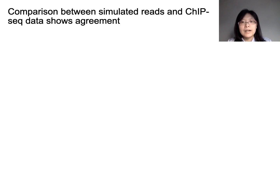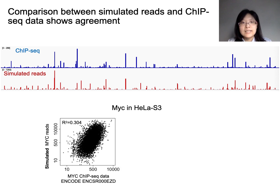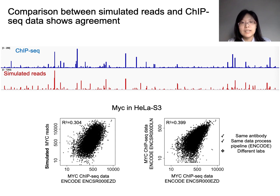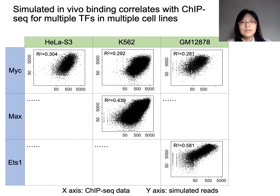Next, we compared the simulated reads to actual ChIP-seq data and observed an overall good agreement in the genome browser tracks. We also looked at the entire dataset more quantitatively by comparing the real versus simulated ChIP-seq pileups. We found a relatively good correlation, as shown here from MYC in HeLa-S3 cells. The correlation observed here is not much lower than the correlation observed between two independently generated ChIP-seq datasets. We can do the same analysis for MYC in more cell lines, and we can also generalize to more transcription factors. Overall, our simulation largely recapitulates the cellular binding profile observed in ChIP-seq experiments.